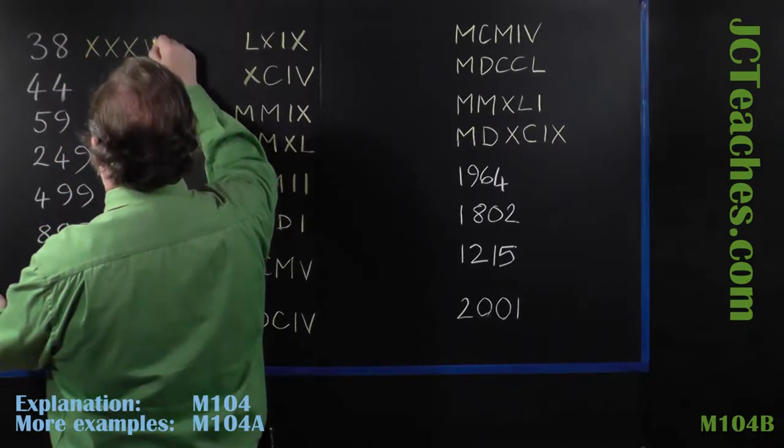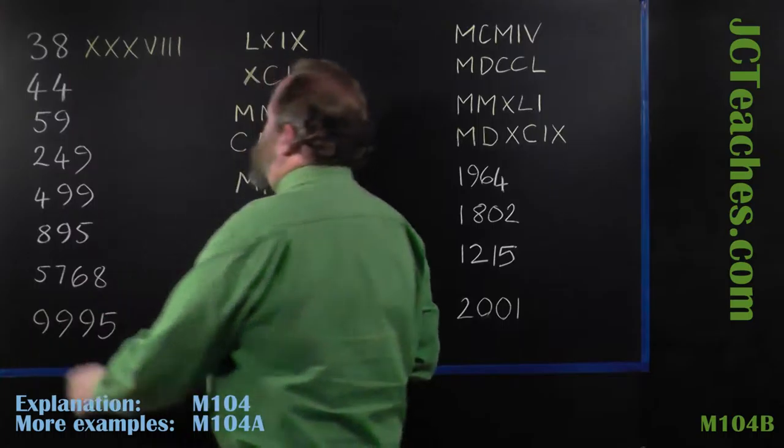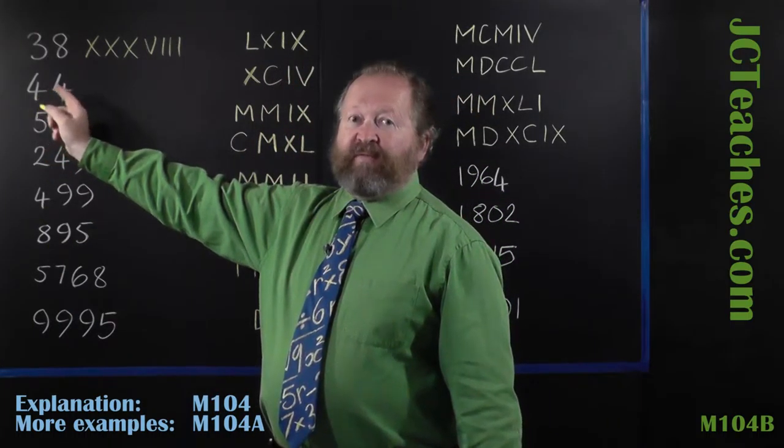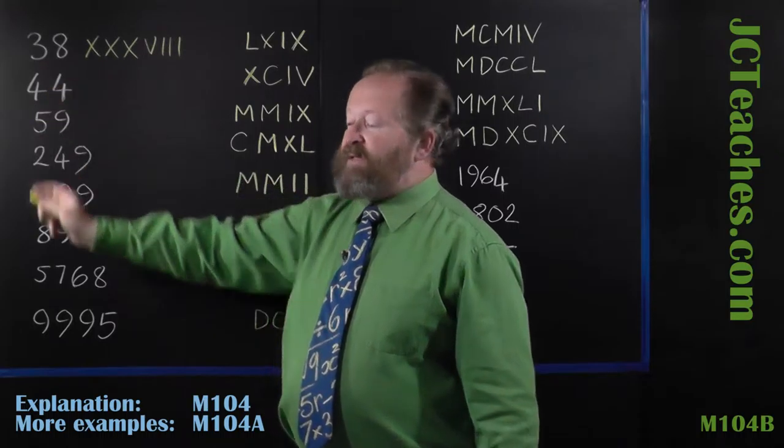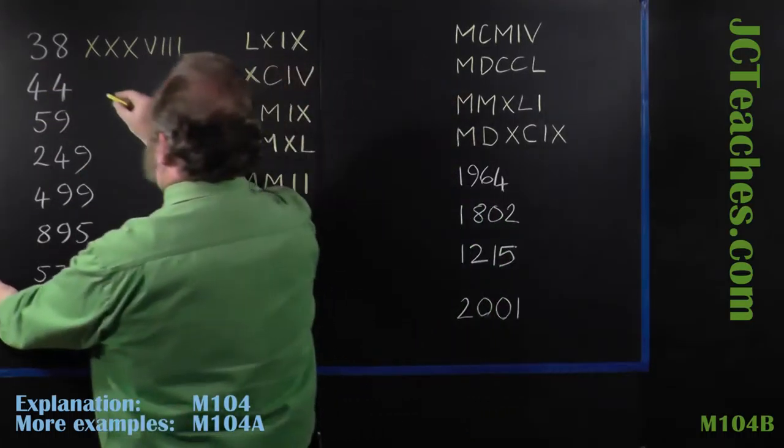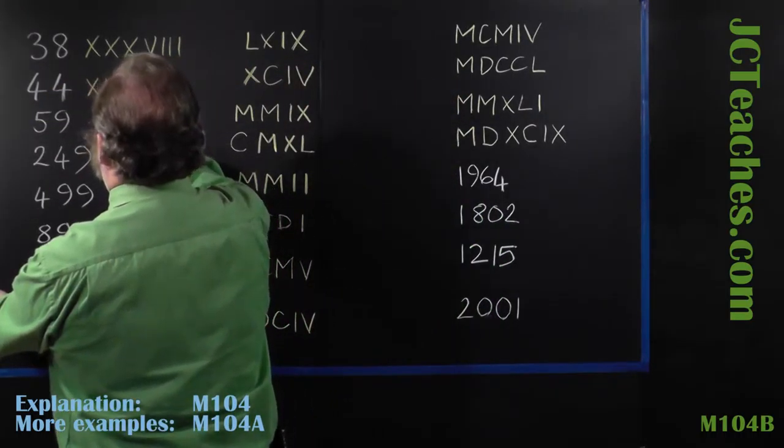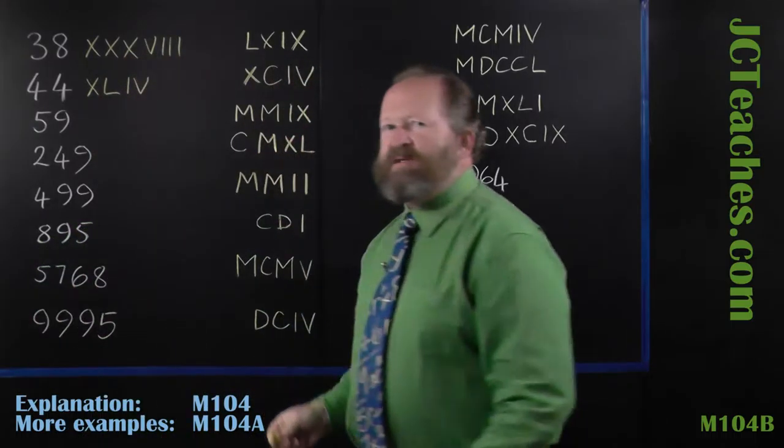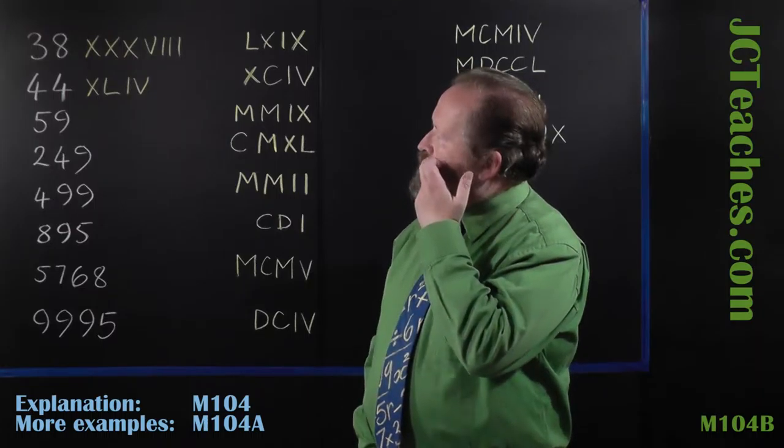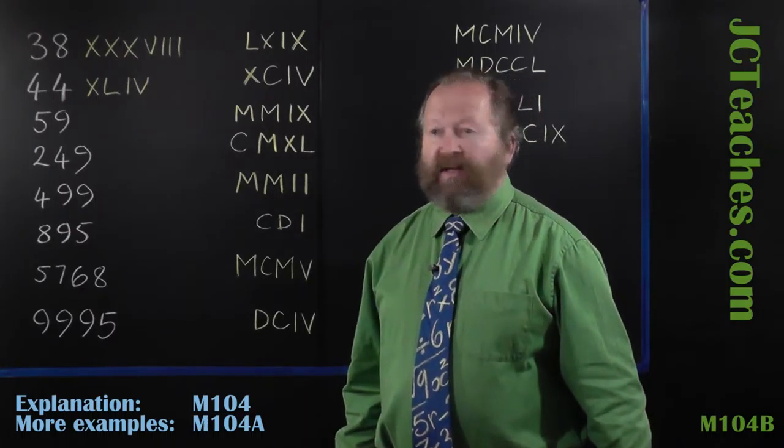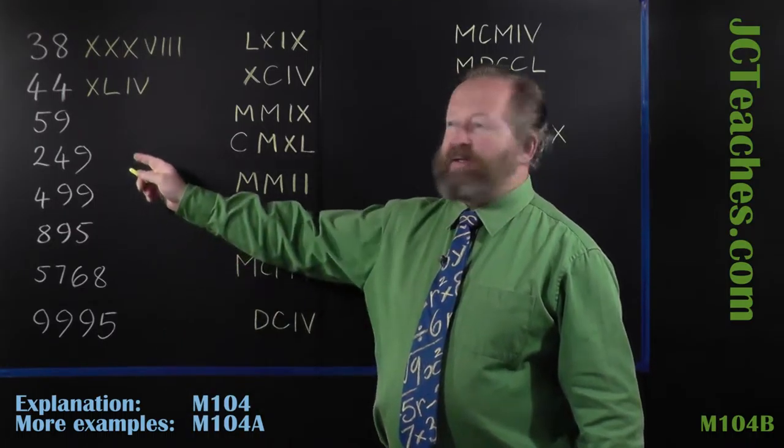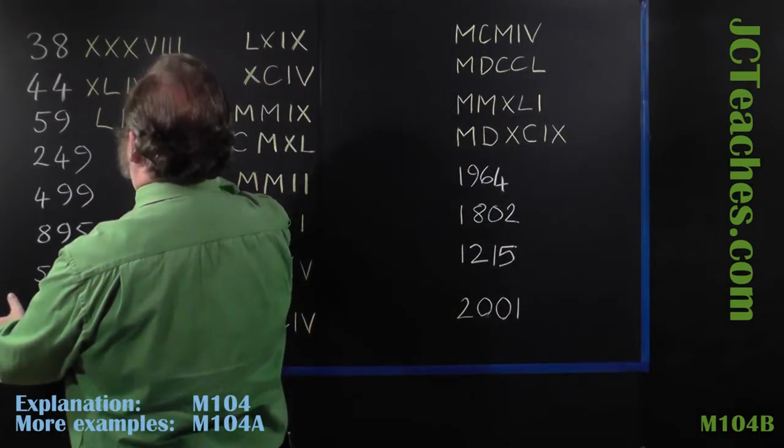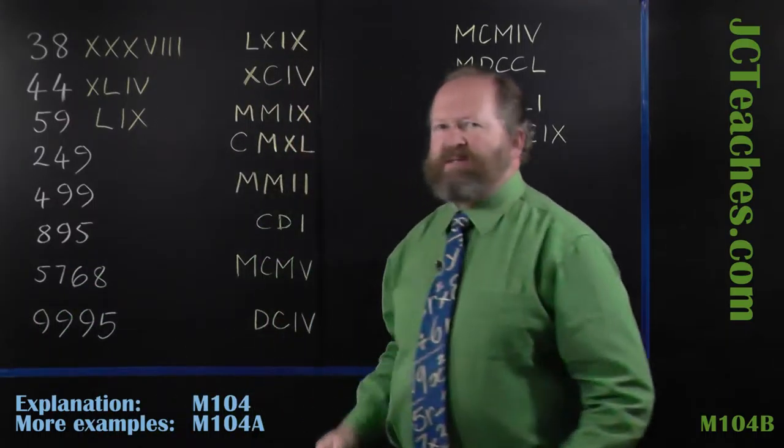44, we do 40 first, and 40 if you remember is usually written as XL. Then we've got four which is usually written as IV. 59, remember that L is 50, so we have L, then we have nine which is usually written as IX.